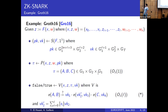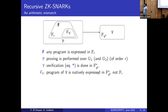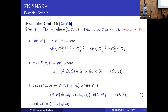Verification involves computing pairings between proof elements and verification elements. This motivates recursive proofs — proofs that verify other proofs. One key application is proof aggregation: since a proof is constant size, a proof of a thousand proofs yields a single constant-size proof that verifies all of them.